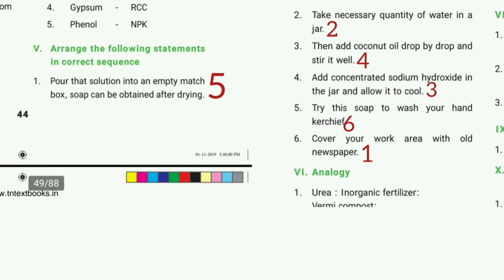Arrange the following statements in correct sequence for soap making: First, cover your work area with old newspaper. Second, take the necessary quantity of water in a jar. Third, add concentrated sodium hydroxide to the jar and allow it to cool. Fourth, add coconut oil drop by drop and stir it well. Fifth, pour the solution into a mold box. Soap can be obtained after drying.